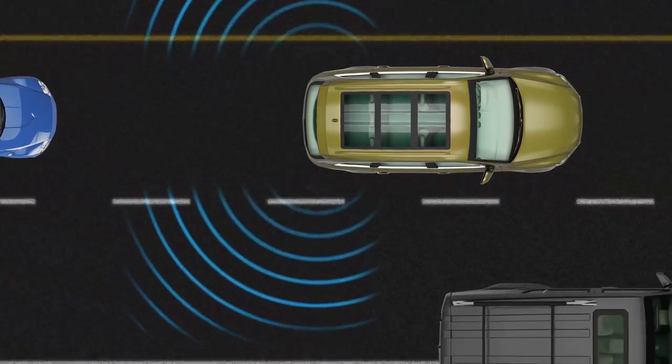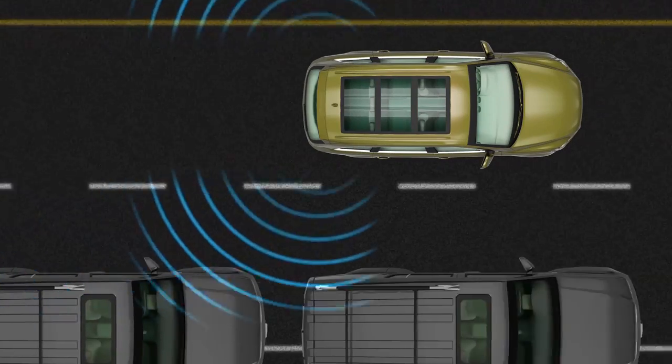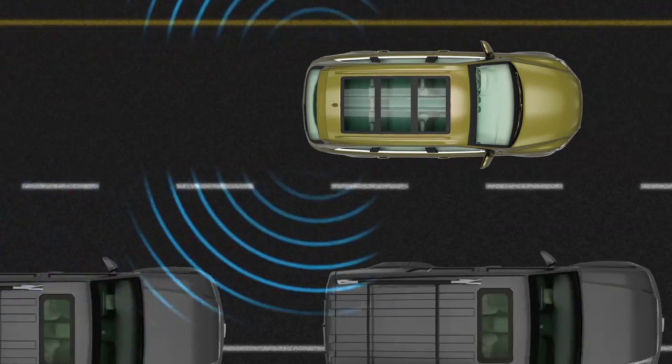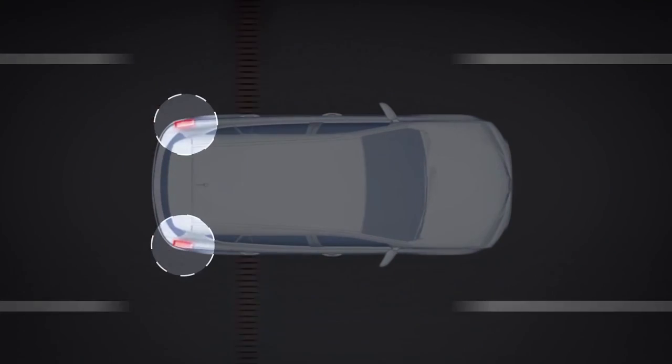Neither will it activate when the Toyota approaches a stationary object, such as a guardrail, wall, or parked cars.